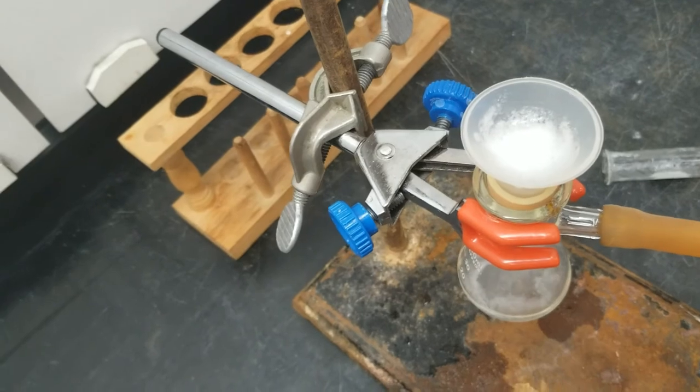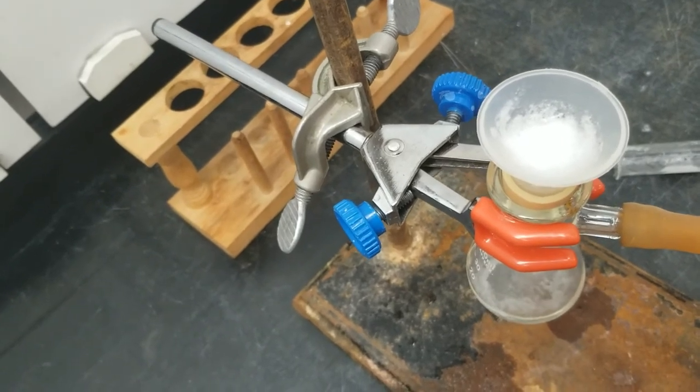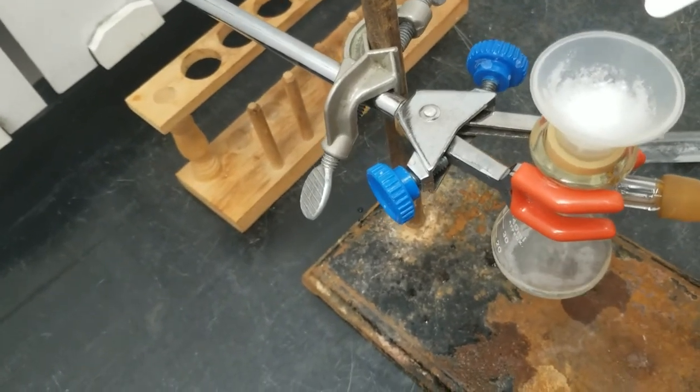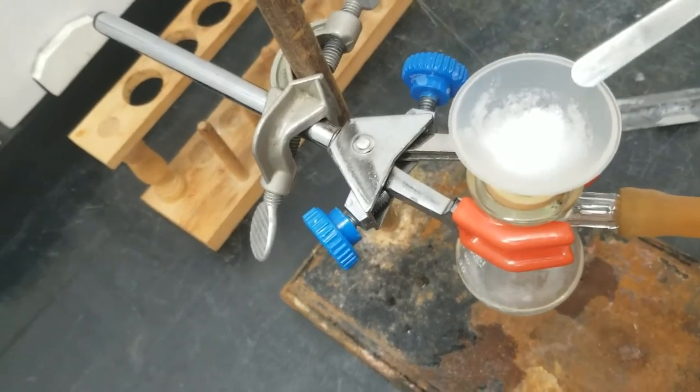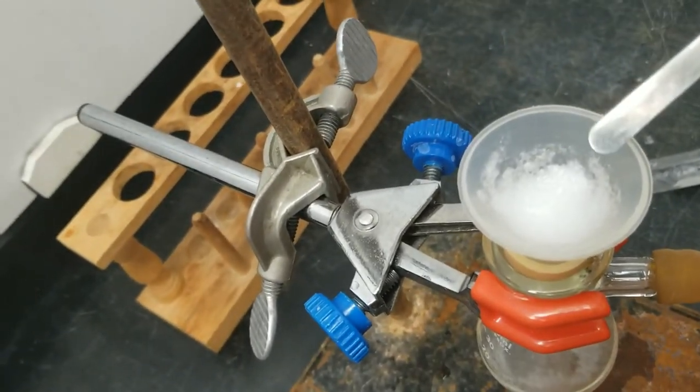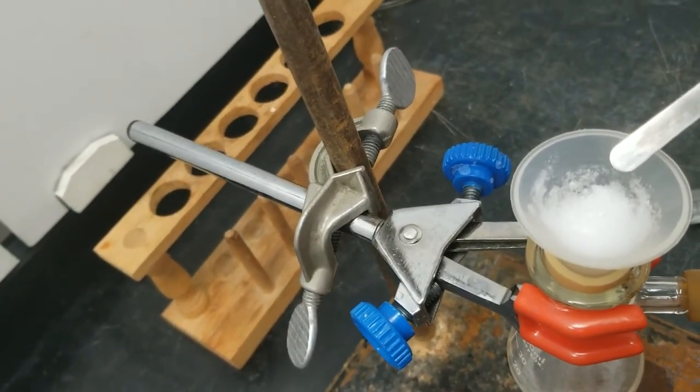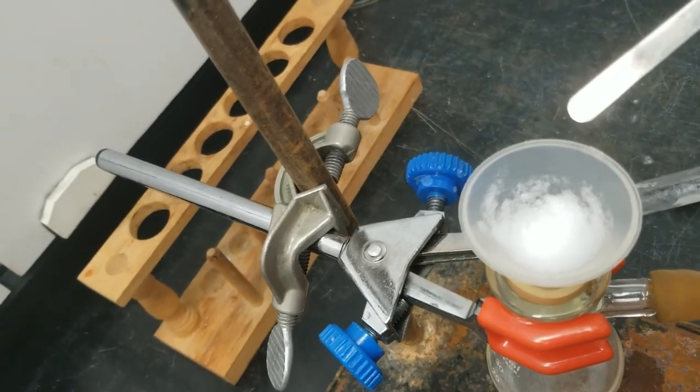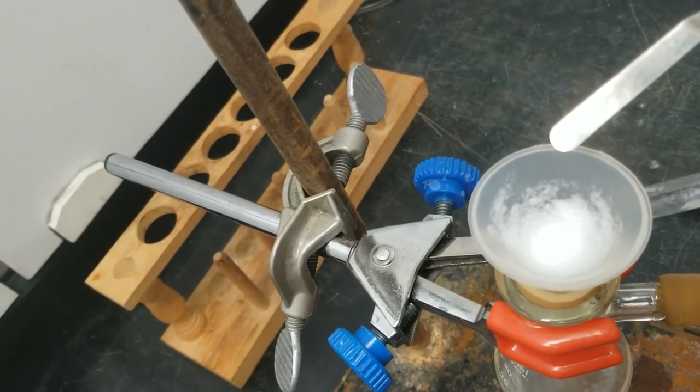And you can see that the liquid is being pulled through and is dripping down into the collection flask. And we're being left with a fairly white, shiny, crystalline product up top. And that is our alcohol product called 1,1-diphenyl methanol.